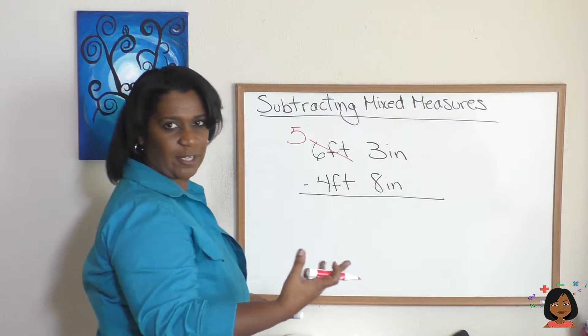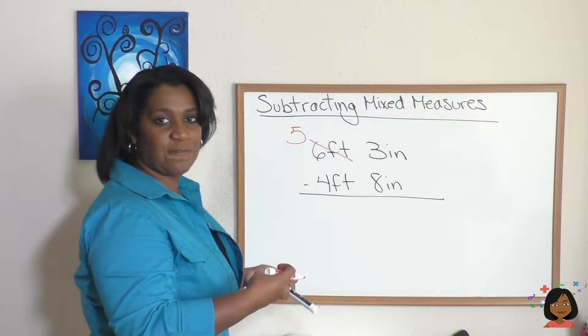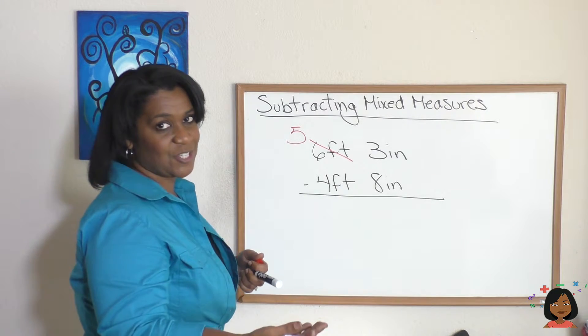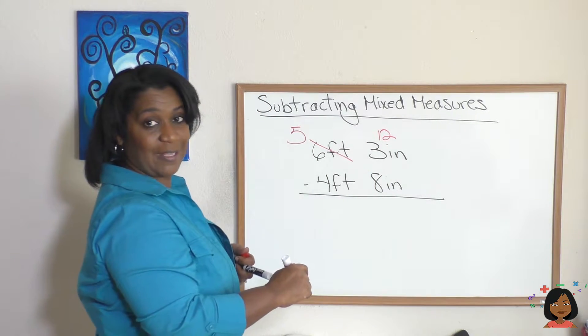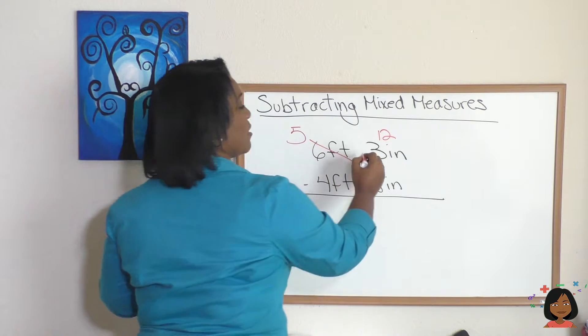So let's take a foot from our 6 feet. We go down to 5 feet and we're going to bring over 1 foot, but we need to convert it to inches. 1 foot equals 12 inches, so we're bringing over 12, but there's 3 there already, so let's add it to that 3 and that's going to be 15 inches.